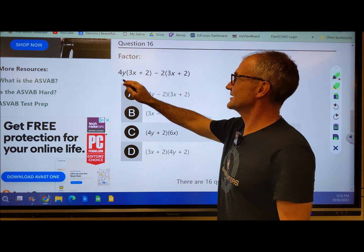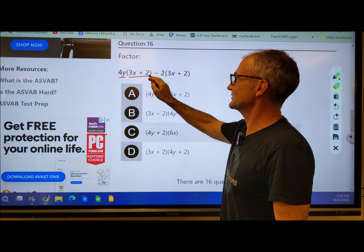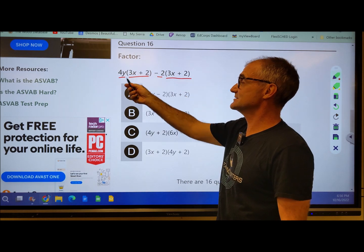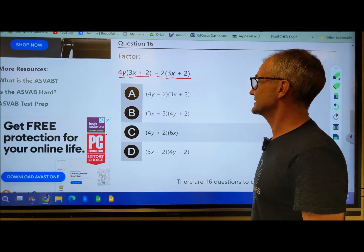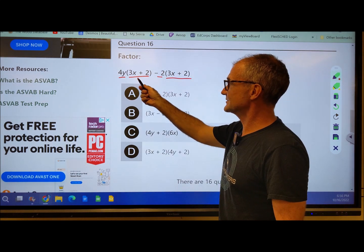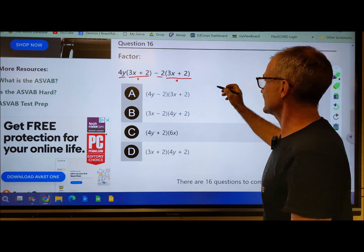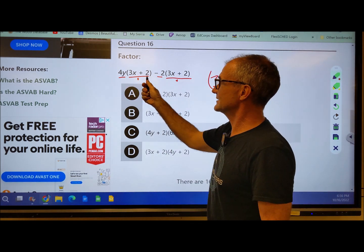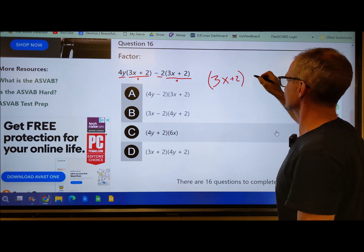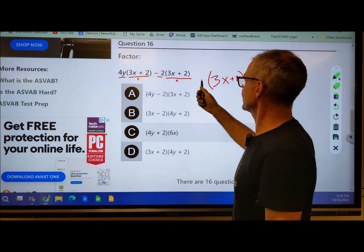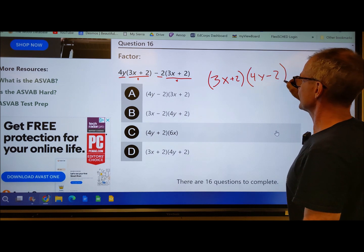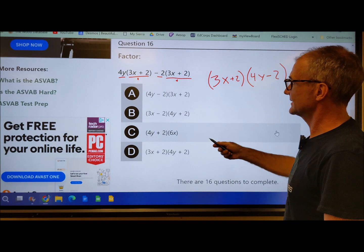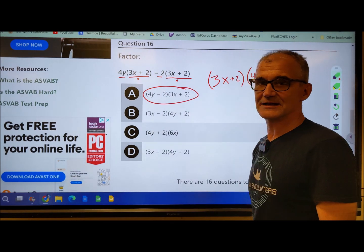Number 16, I have 4Y times quantity 3X plus 2 minus 2 times 3X plus 2, and I'm asked to factor. This is not an equation, there's no equality sign, it's an expression. But I notice there's this common term in both of them. So I pull that term out, 3X plus 2. And once I pull that common term out, in this term I'm left with a 4Y, and right here I'm left with a negative 2. So it's the same thing as 3X plus 2 times the quantity 4Y minus 2. And there's the correct answer, answer A.